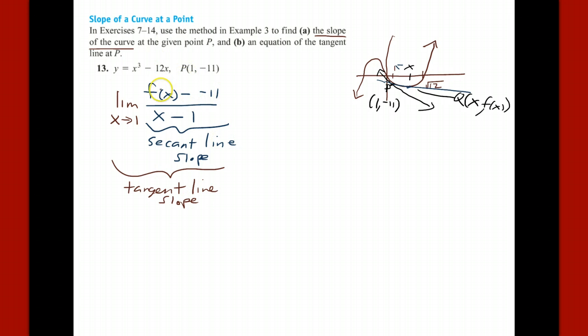Now, f of x is this function here, x cubed minus 12x. So we have the limit as x goes to 1 of x cubed minus 12x. And then we add 11, and the whole thing is divided by x minus 1.